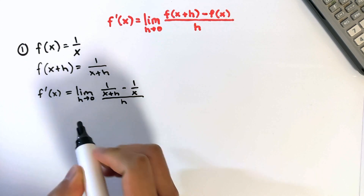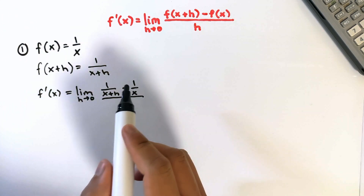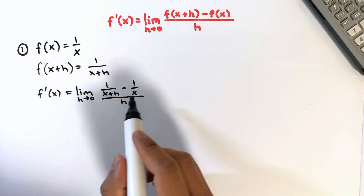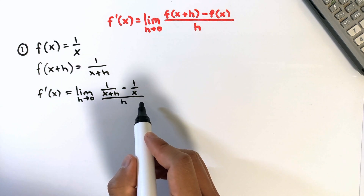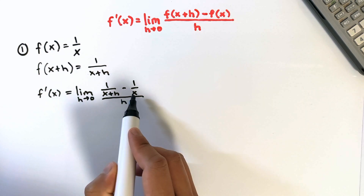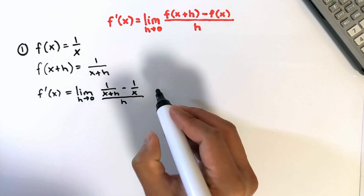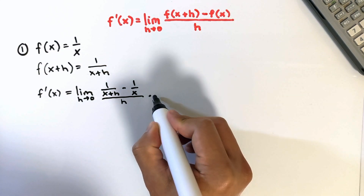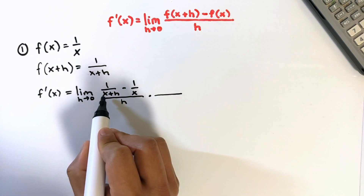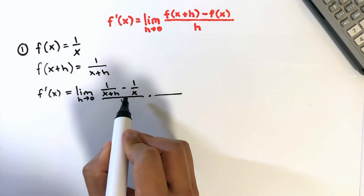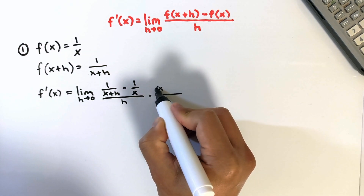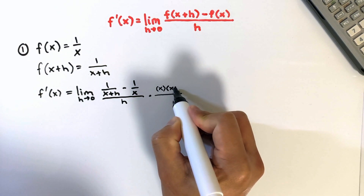This is a complex fraction, so we can simplify it by multiplying the numerator and denominator by the LCD of the smaller denominators. In this example, the LCD of the smaller denominators x plus h and x is the product of x and x plus h.